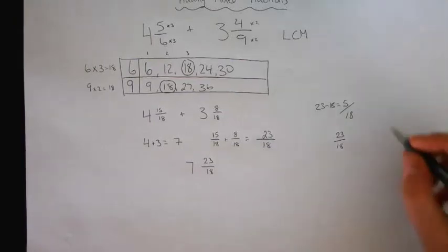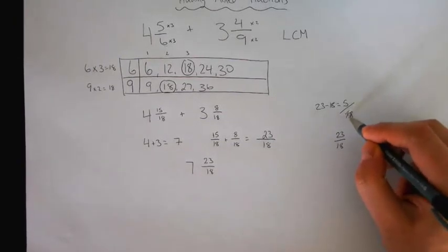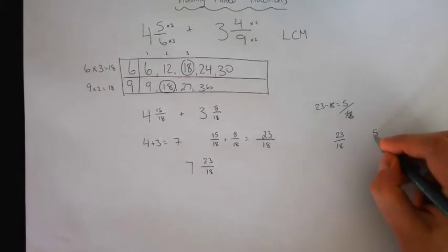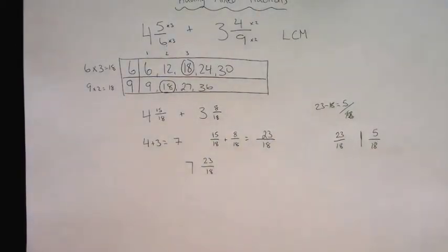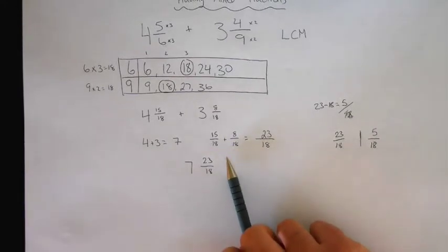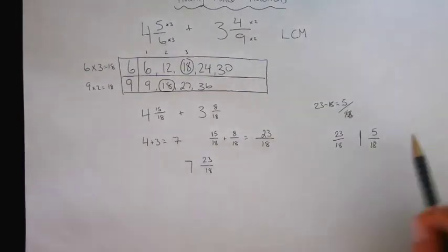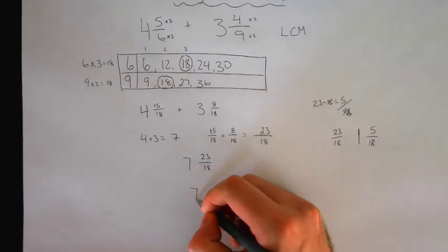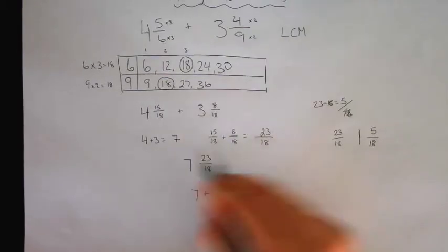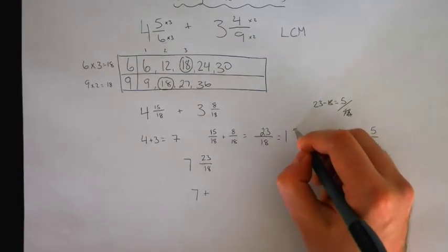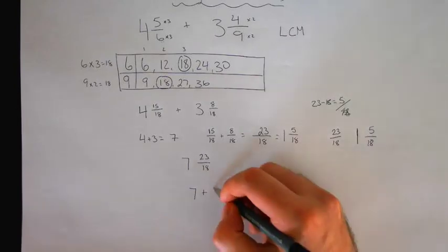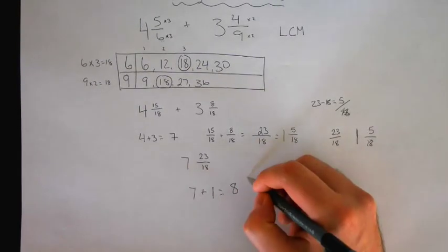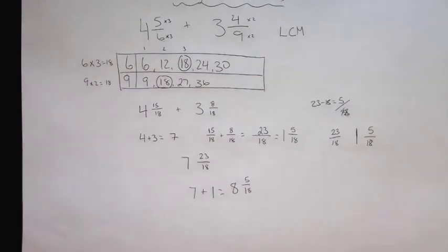We have 23. So 23 minus 18 leaves us with 5 leftover slices. And we've already created that one pizza. Because when the numerator is bigger than the denominator, that tells us we have at least one hole. So now we have 7 from here. This has now turned into 1 and 5 18ths. But since we have another hole, we can add the hole again. 8. And what's left over is 5 18ths.